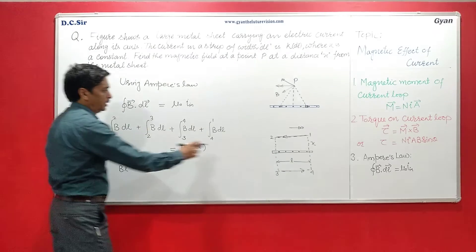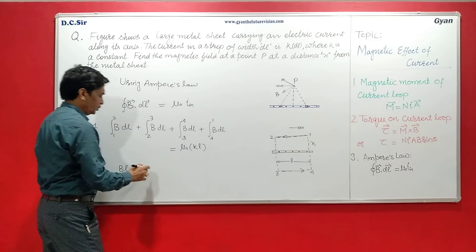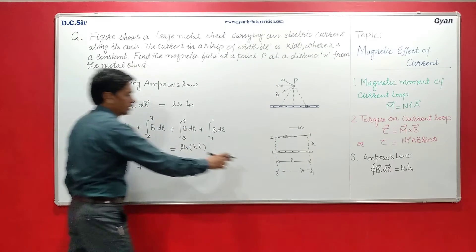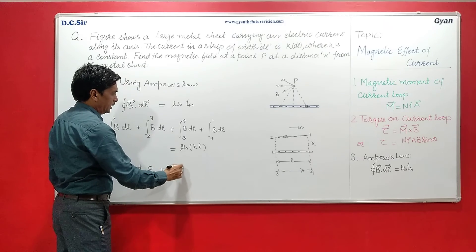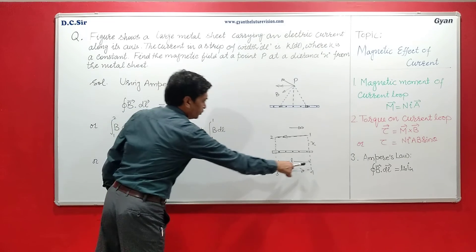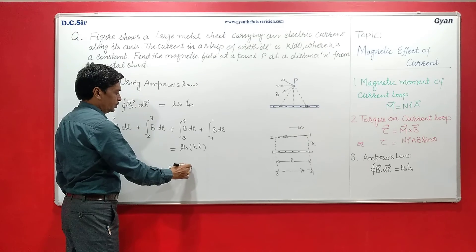Here is no magnetic field from 2 to 3 so it will be 0, and here from 3 to 4 this is of length L so it will be B·L, and from 4 to 1 there is no magnetic field so it is also 0.